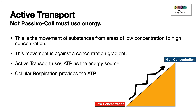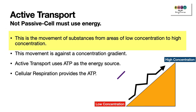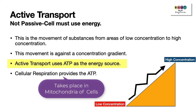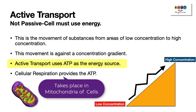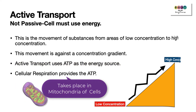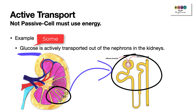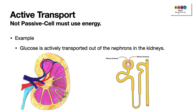Finally, we have active transport — another method used to transport substances across membranes into and out of cells. Unlike diffusion and osmosis, active transport is not passive; the cell must use energy. In active transport, substances are moved from areas of low concentration to areas of high concentration — against a concentration gradient. Active transport uses ATP as the energy source, provided by cellular respiration, so cells with active transport will have many mitochondria. An example is glucose, which is actively transported out of the nephrons in the kidneys.